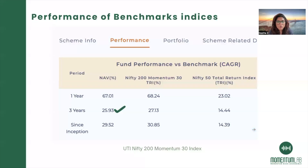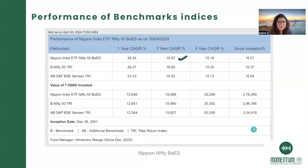Before getting into the video, let me show you how the benchmark indices are looking this month. The Nifty 200 Momentum 30 has a three-year CAGR of 25.93%, and the Nippon Bees Nifty index has a three-year CAGR of 16.87%.